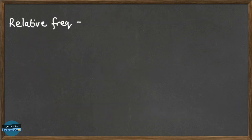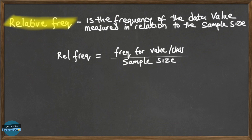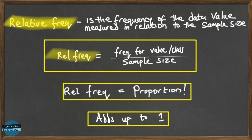Relative frequency is the frequency of a data value looked at in relation to the sample size. We're not just looking at the count of values, but relating it to the total sample size. Relative frequency is computed by dividing the frequency by the total number of elements in the sample. It is a proportion — part of a whole — and all relative frequencies add up to one.